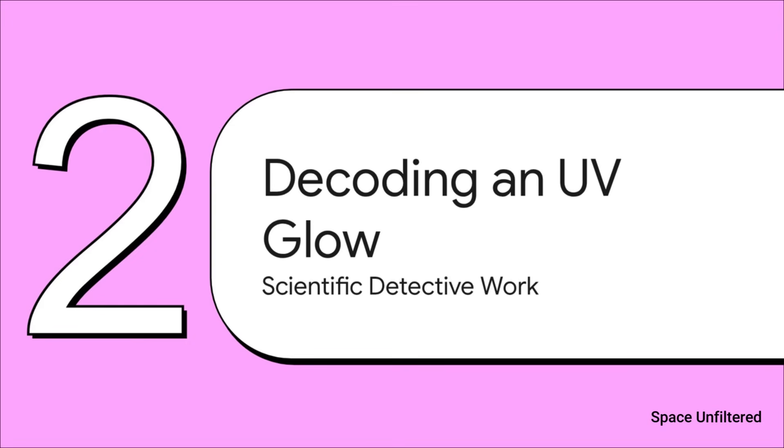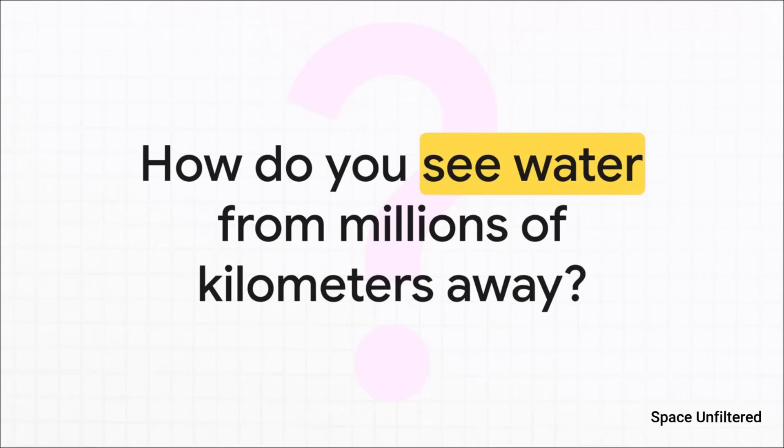Which brings us to the next part: Decoding an Ultraviolet Glow. This is where we get into the scientific detective work. Think about it. Finding water on something that's millions of kilometers away, that's an incredible challenge. It takes some seriously clever techniques. How do you actually see water from millions upon millions of kilometers away? It's not like you can just point a telescope and spot a puddle on its surface.